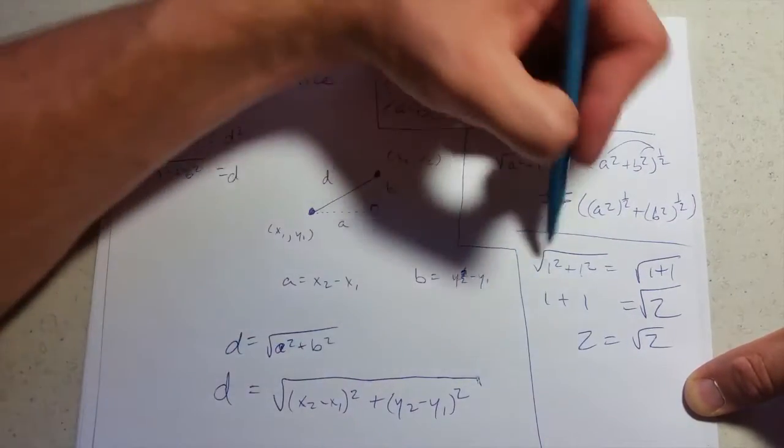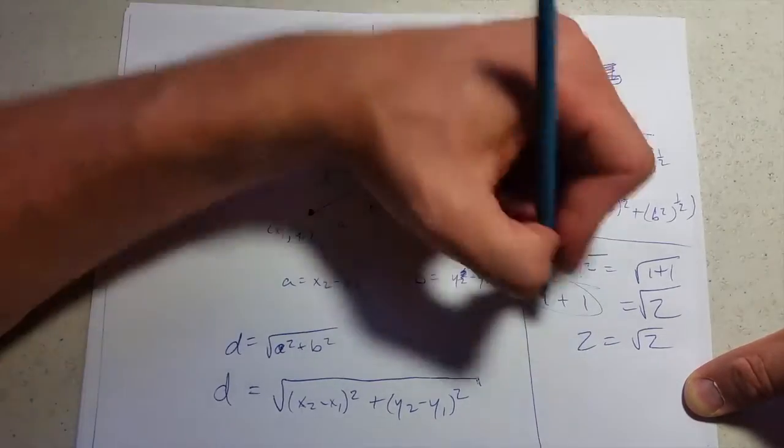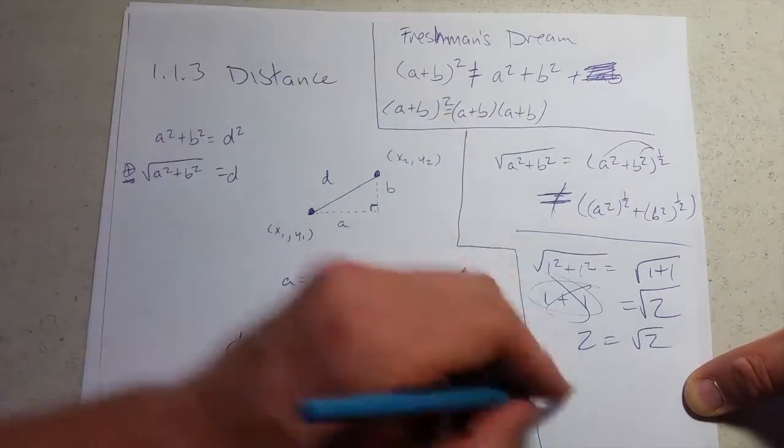So somewhere we went wrong. Where did we go wrong? Right there. That's some bad math. So now make sure you follow along with the examples in the textbook of how do you take two points and get the numerical distance between them.